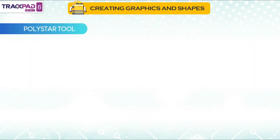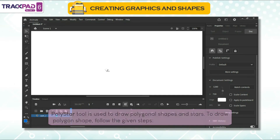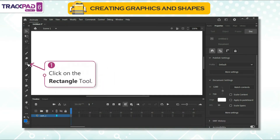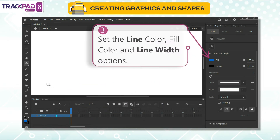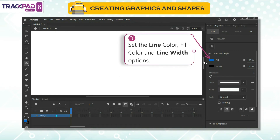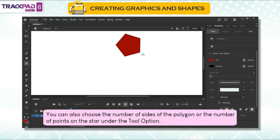Poly star tool: the poly star tool is used to draw polygonal shapes and stars. To draw a polygon shape, follow the given steps. First, click on the rectangle tool. Second, select the poly star tool. Third, set the line color, fill color and line width options. Fourth, click and drag on the stage area to draw the shapes. You can also choose the number of sides of the polygon or the number of points on the star under the tool option.